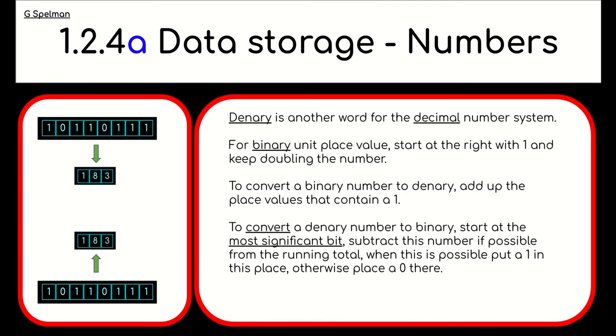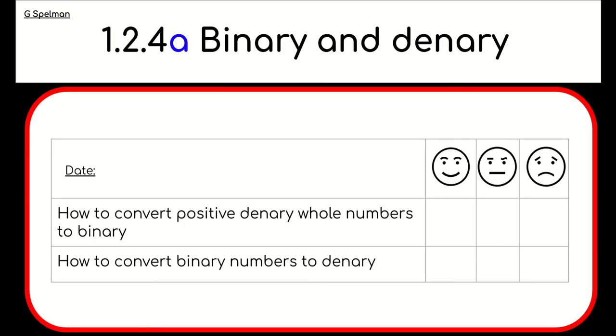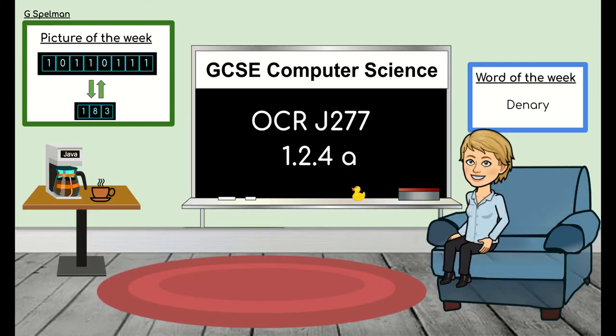So what have we learned? We've learned that denary is just another word for decimal. When we're putting in our column headings for binary, we start at the right and put in a one and double our number along. To convert a binary number to denary, we just add up the place values that contain a one. To convert a denary number to binary, we start at the most significant bit and subtract this number, if possible, from the running total. When this is possible, we put a one in the place. Otherwise, we place a zero and continue doing this until we get to zero. That's it for this video. Do take stock of where you feel you are now. I hope you have made progress in this topic.